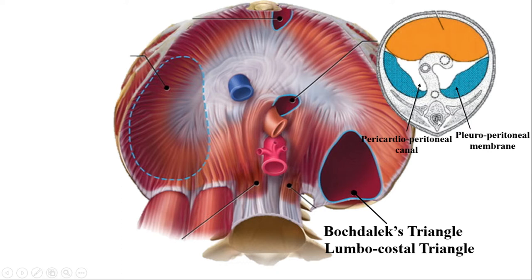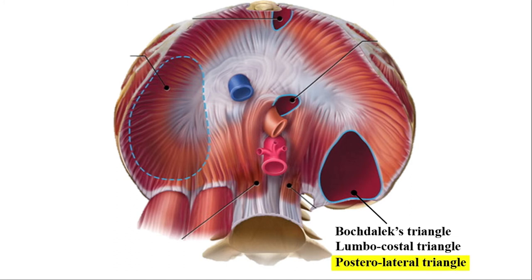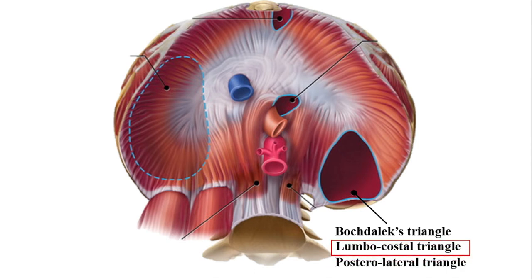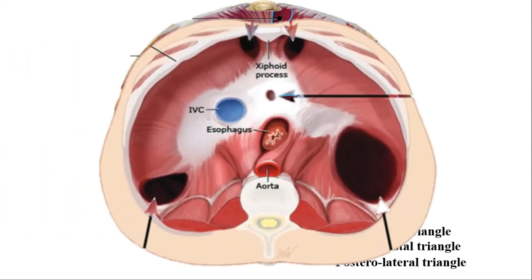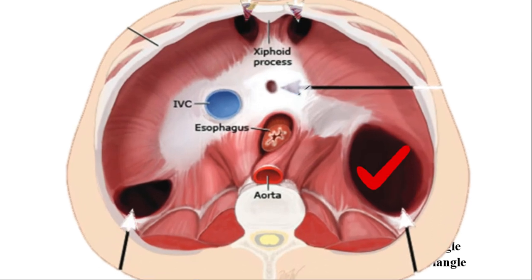This defect is situated in the posterior lateral part of the diaphragm — we can identify this as the posterior part because we can see the lumbar vertebrae here. The defect is in the posterior lateral part of the diaphragm, hence it is known as the posterior lateral triangle, also known as the lumbar costal triangle or Bochdalek's triangle. Herniation through this triangle is called Bochdalek hernia, lumbar costal hernia, or posterior lateral hernia.